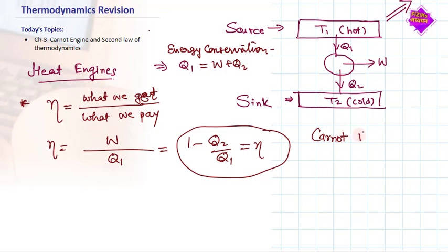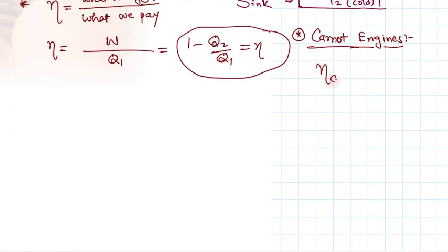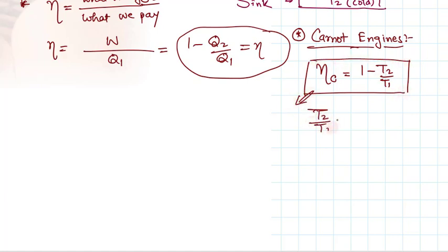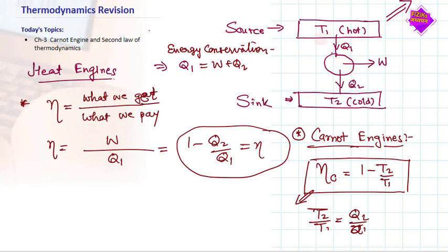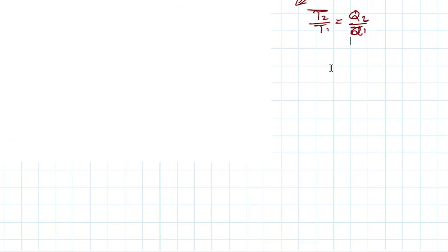There are engines that exist in theory called Carnot engines, which are supposed to have maximum efficiency. It can be proved that Carnot engines have greater efficiency than any other practical heat engine. For a Carnot engine, efficiency η = 1 - T2/T1, where it depends on temperature. For a Carnot engine, Q2/Q1 = T2/T1, meaning the ratio of heat extracted depends on the temperatures T1 and T2.